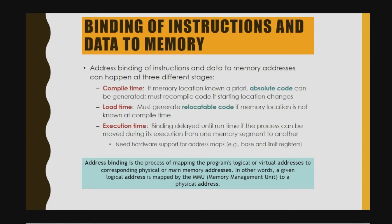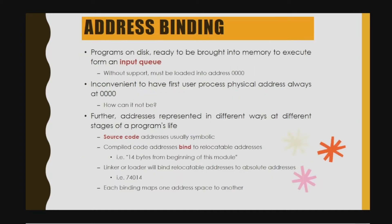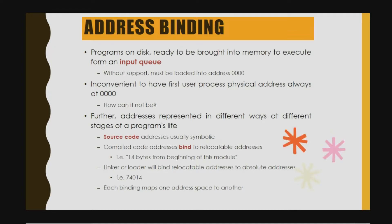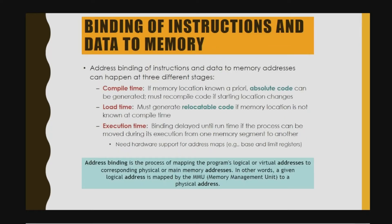The linker or loader will bind relocatable addresses to absolute addresses — for example, 14 bytes from the beginning of a module binds to absolute address 74014. Each binding maps one address space to another. Address binding of instructions and data to memory addresses can happen at three different stages. In the source code the address is usually a symbolic link, and we use address binding to allocate to memory.